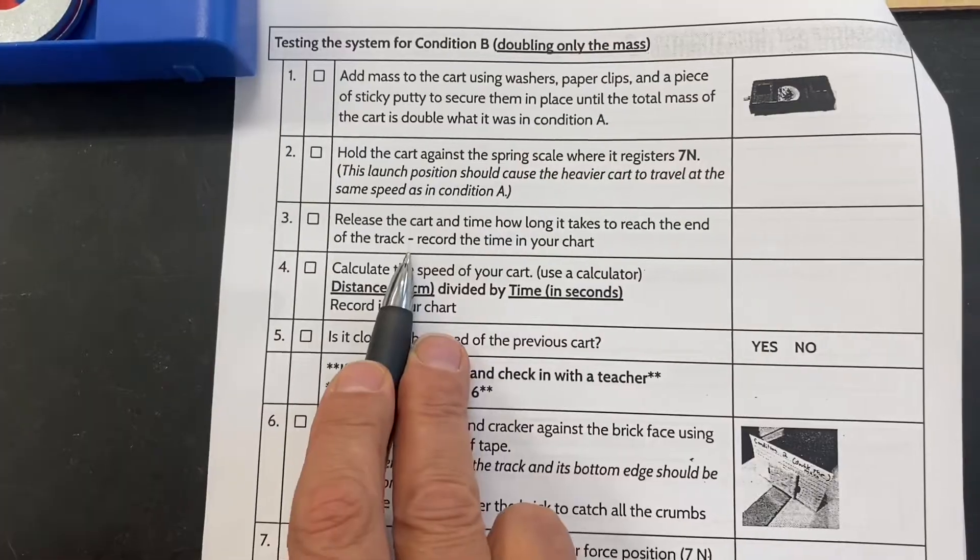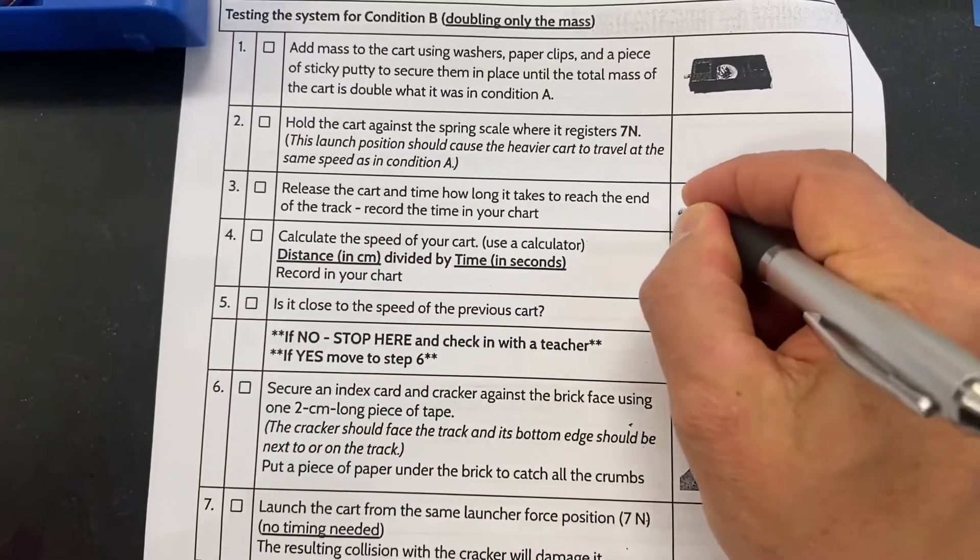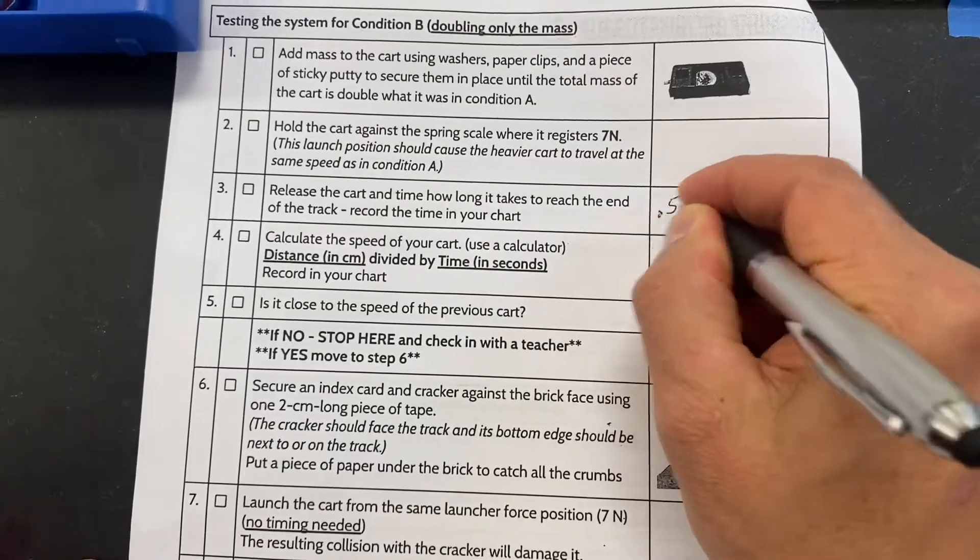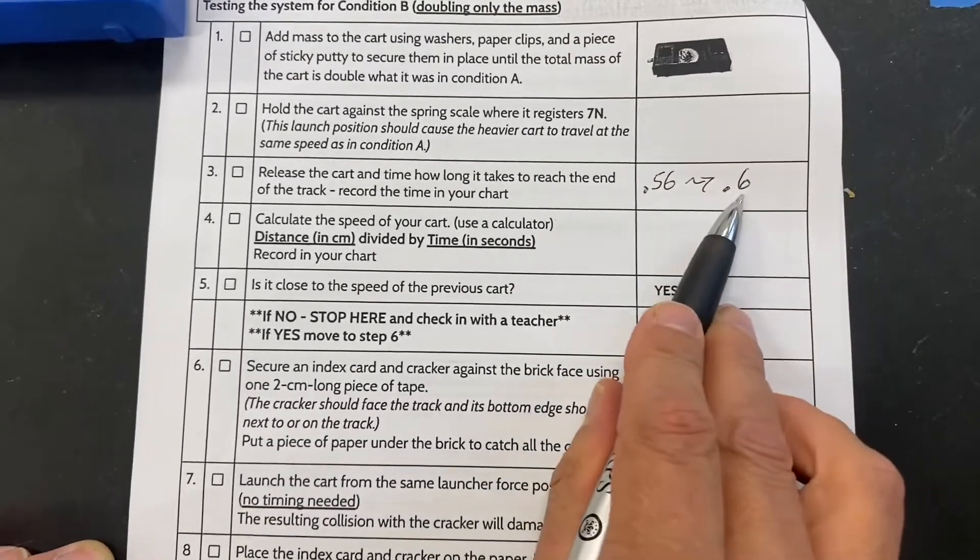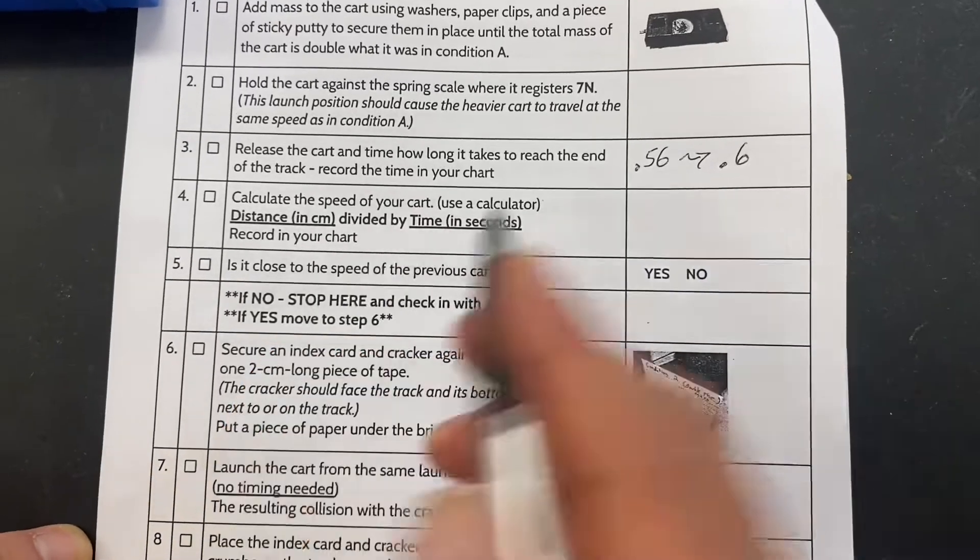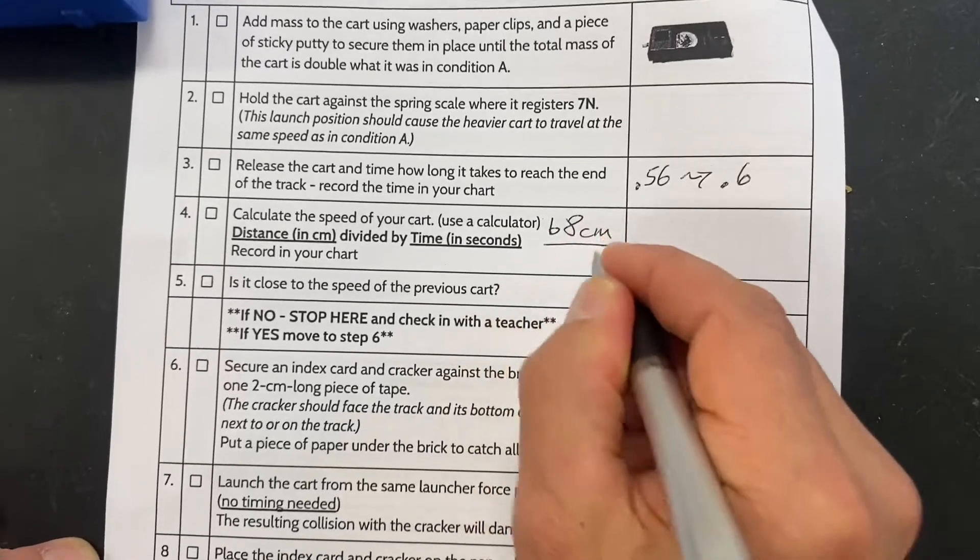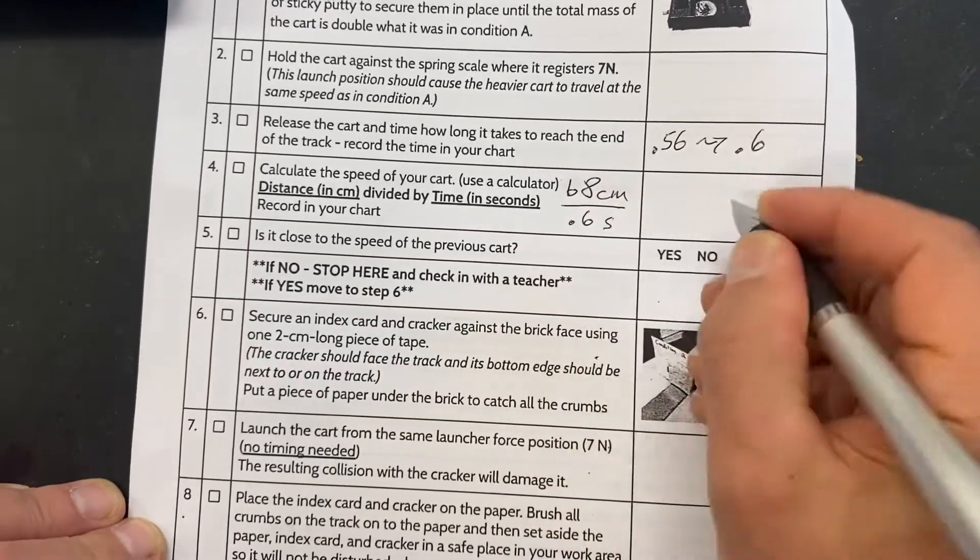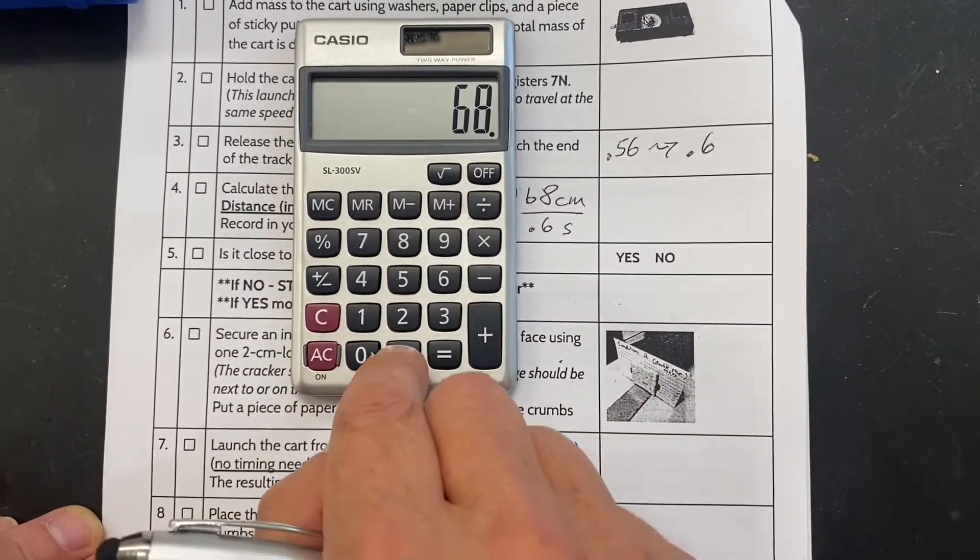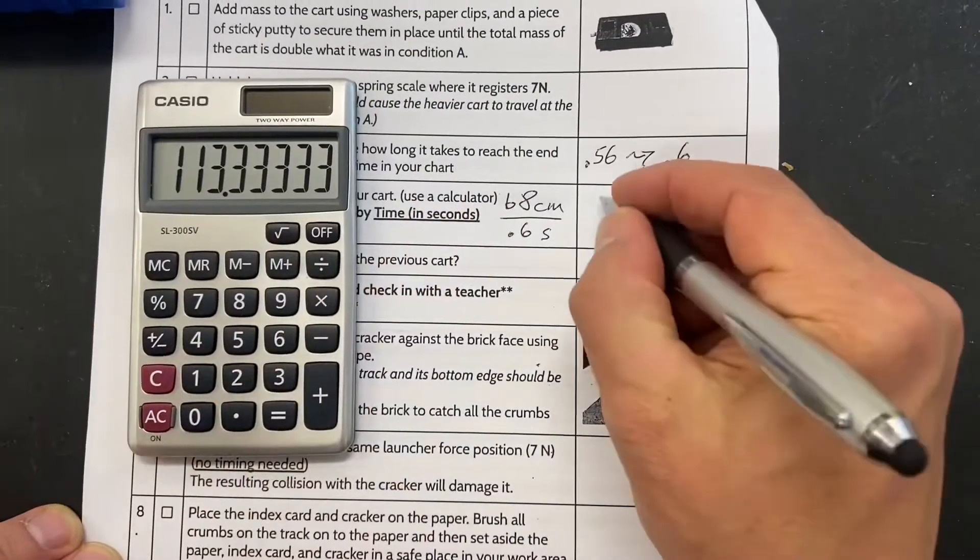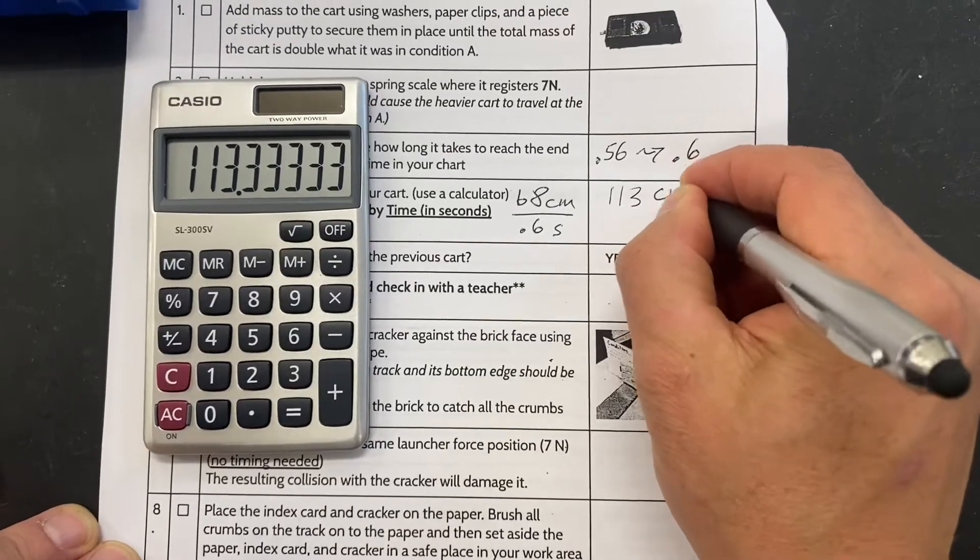Now in this paper, which you don't have to write on, we're not going to bother writing down all those trials. We're just going to mentally look at it and figure out that the average is going to be somewhere between 0.56 and 0.6 seconds. So we'll just use that number, 0.6 seconds. And then we're going to use our distance over time formula. The distance of the track is 68 centimeters. We'll divide it by our average time of 0.6 seconds. 68 divided by 0.6 is equal to 113 centimeters per second.